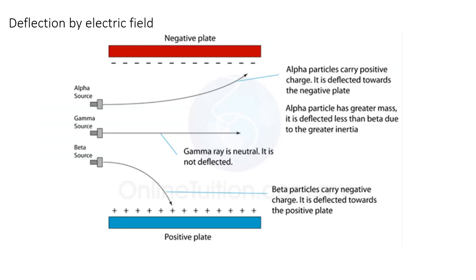Let's look at another picture. Here there is a description of what is happening to the radioactive source. Alpha is deflected towards the negative plate because alpha is a positively charged particle. The gamma ray is moving straight forward without deflecting because gamma ray is neutral. While the beta particle is deflected towards the positive plate because beta particles are negatively charged. Remember that alpha and beta will be deflected in the electric field, and gamma ray will not be deflected.